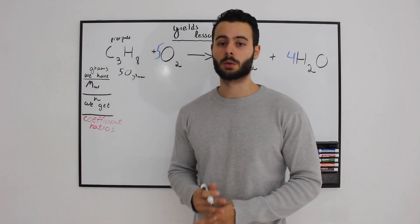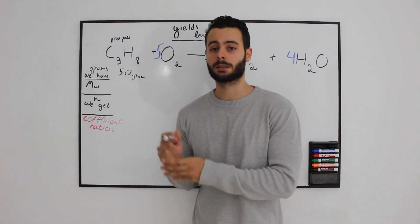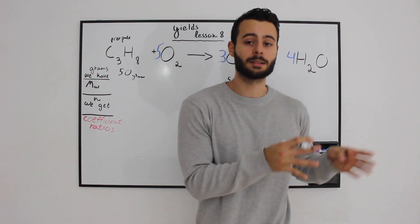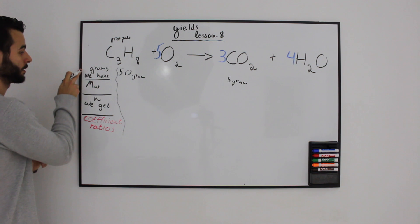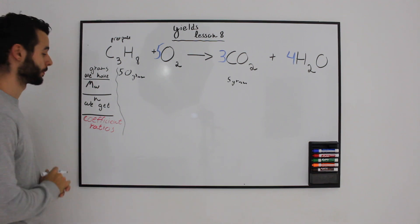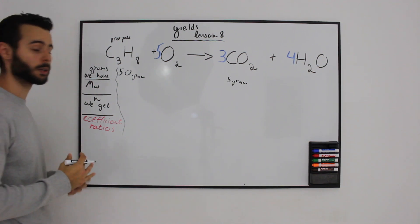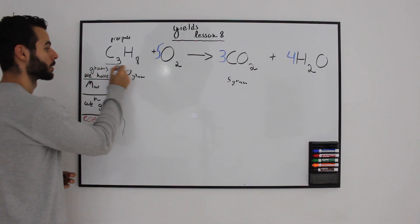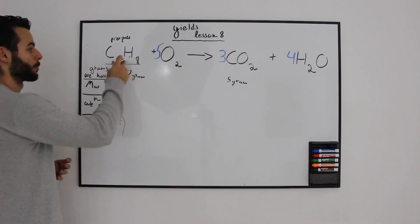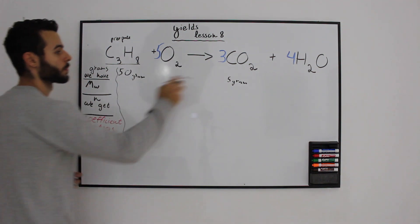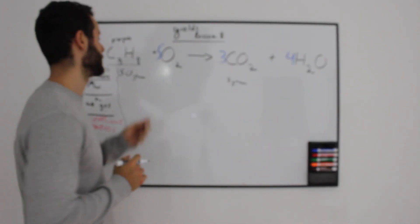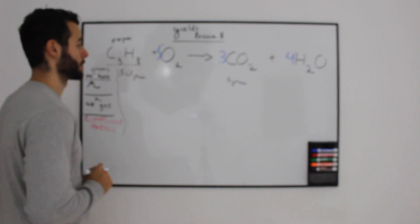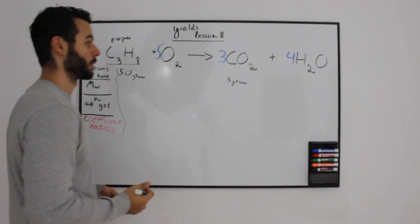The first thing we are going to do is create a table that will represent the following: the grams we actually have, the molecular weight of the molecule. If you have propane, oxygen, carbon dioxide, and water, you should very easily calculate the molecular weights of these molecules.